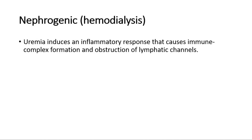The fourth type is nephrogenic ascites, which is due to hemodialysis. In renal failure, uremia induces an inflammatory response that causes immune complex formation and obstruction of lymphatic channels, causing ascites.